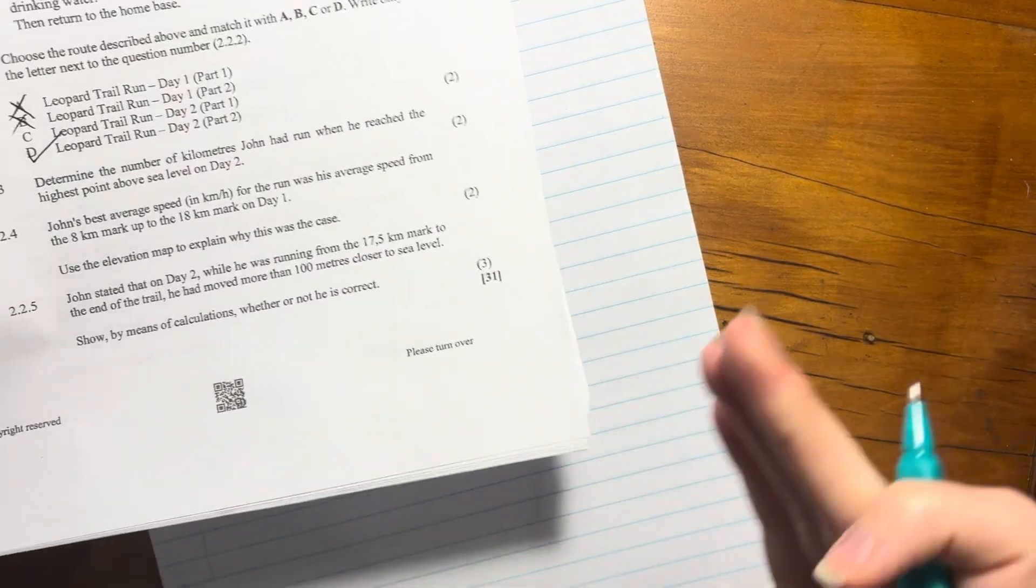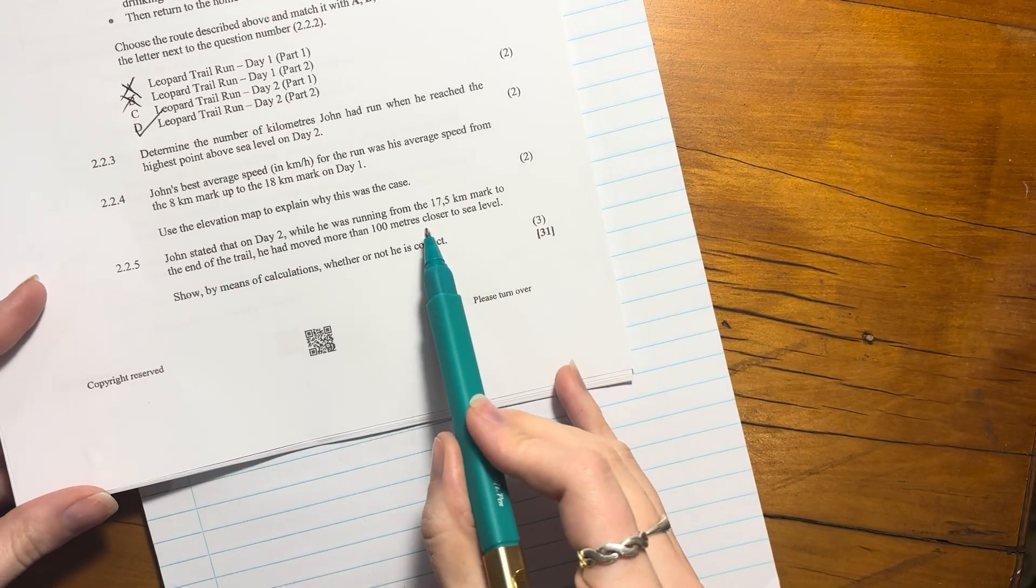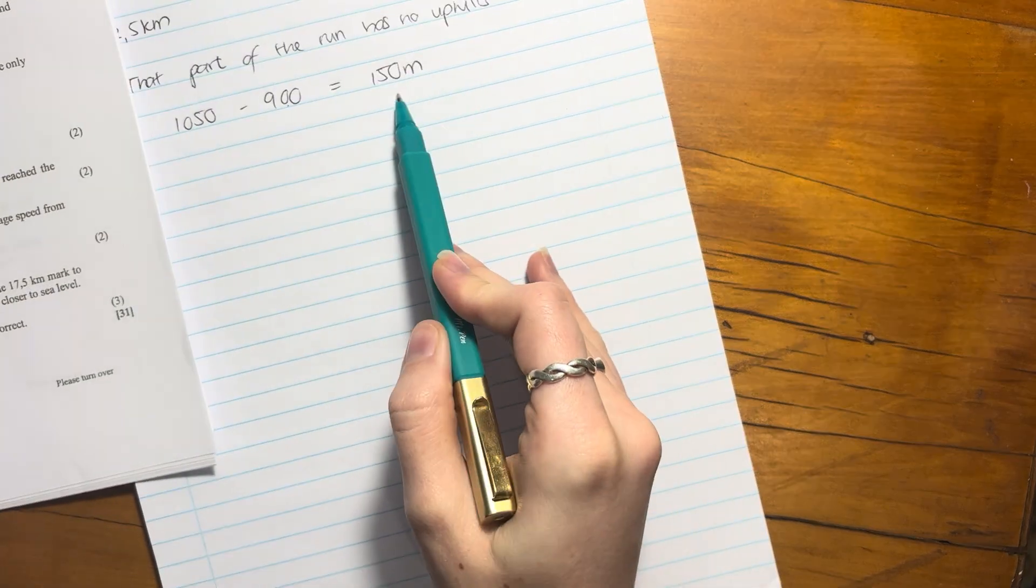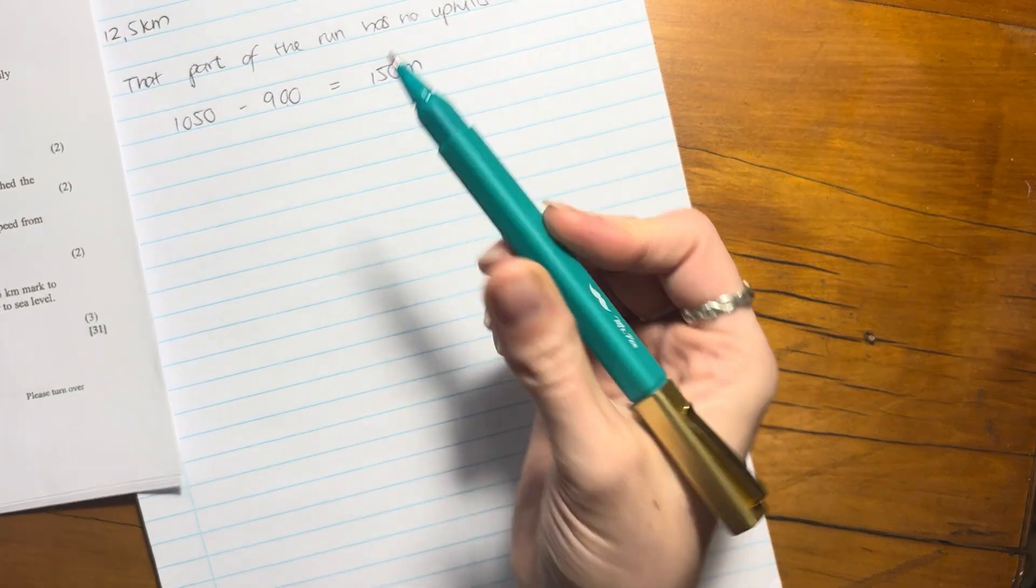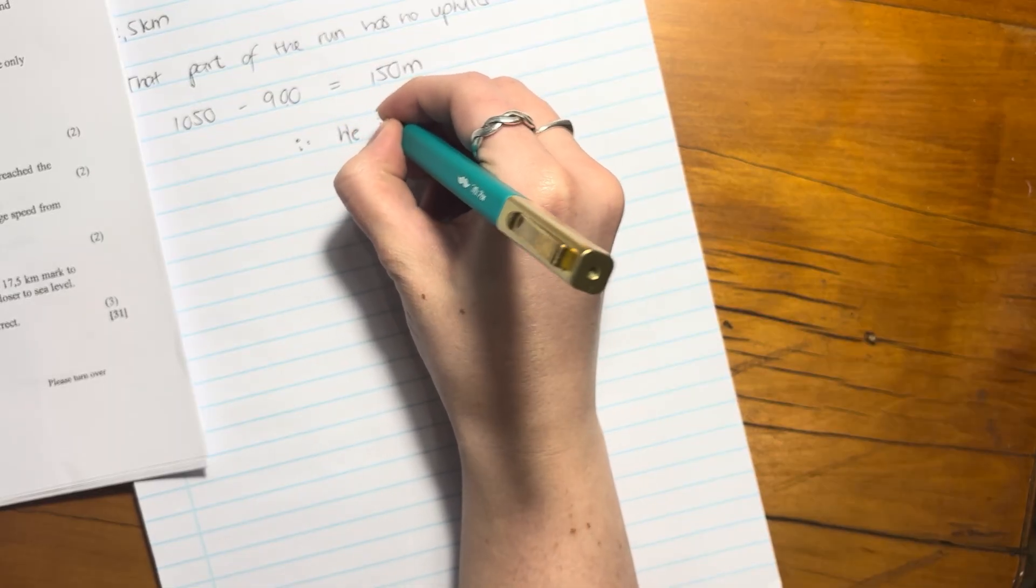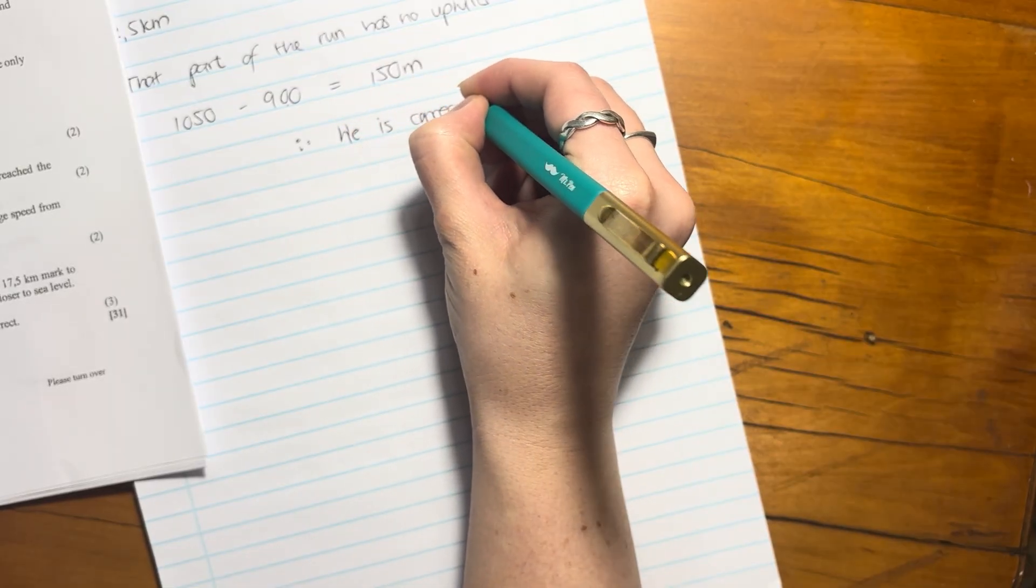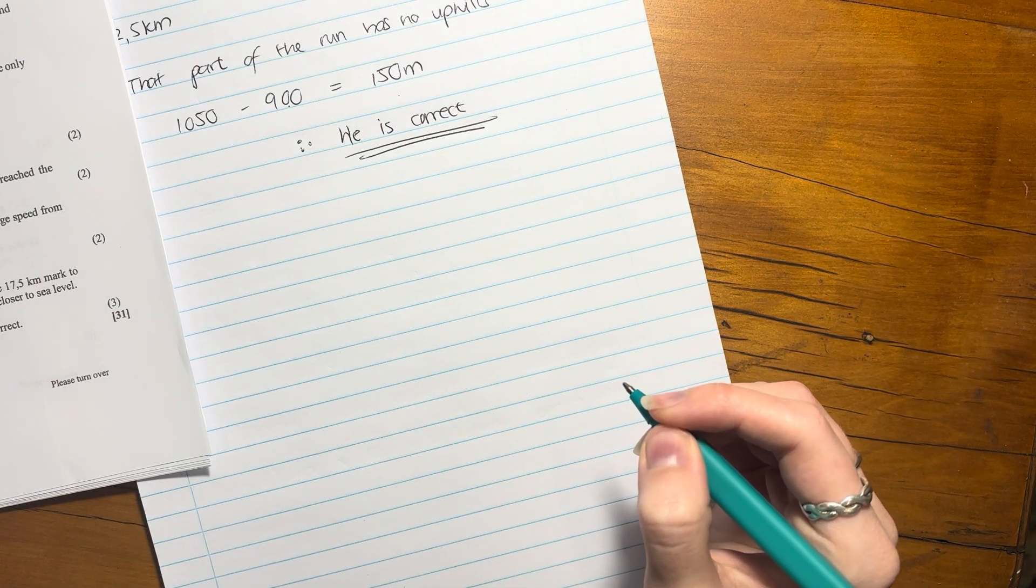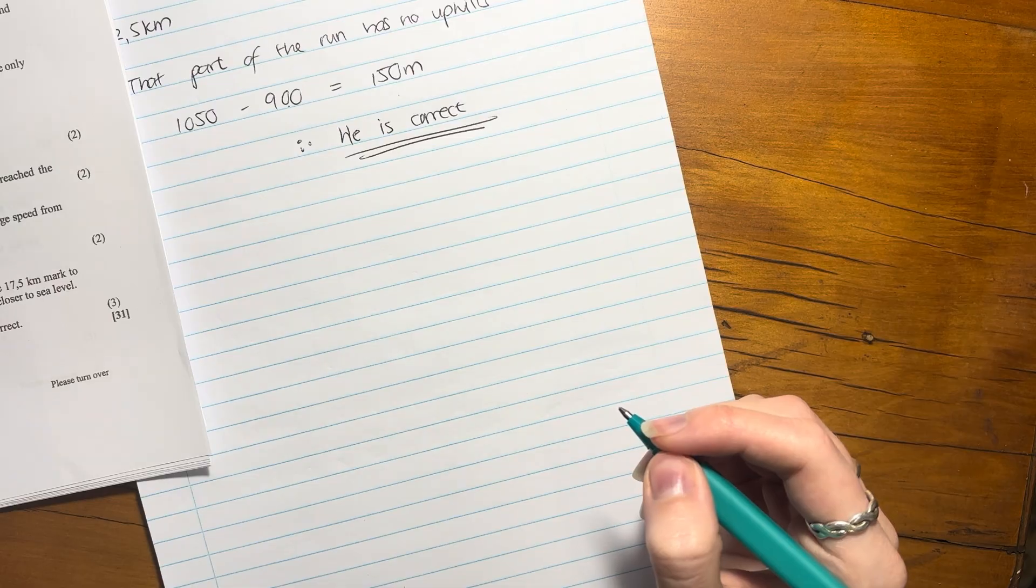He said he had moved more than 100 meters closer to sea level. Well, he'd moved actually 150 meters, which is more than 100, therefore he is correct. Don't forget to put this in, you get a mark for that. As that's done, we can now move on to question three.